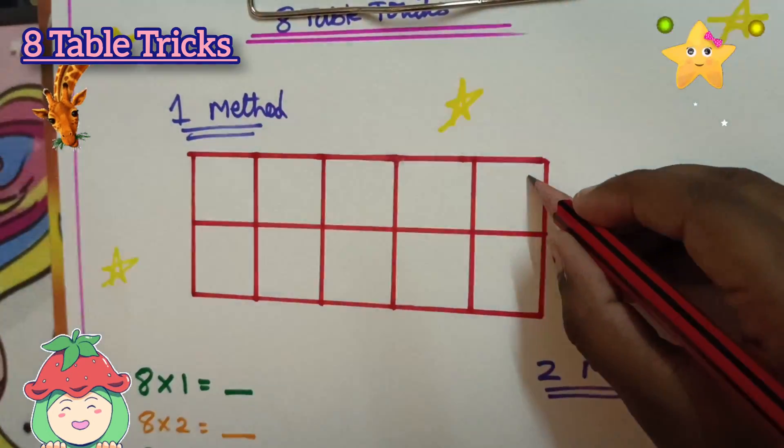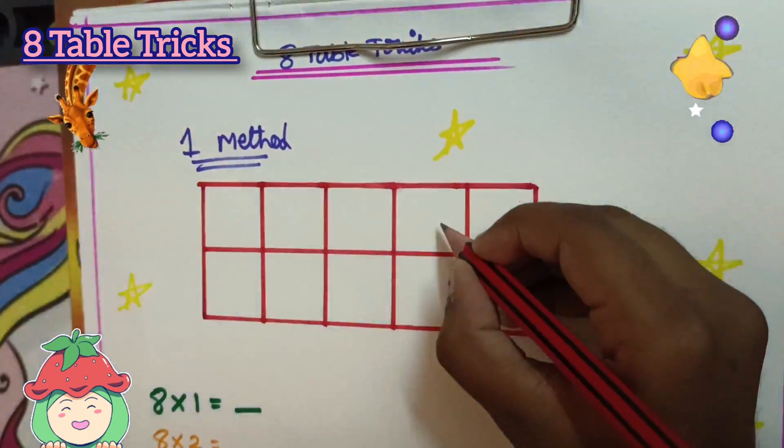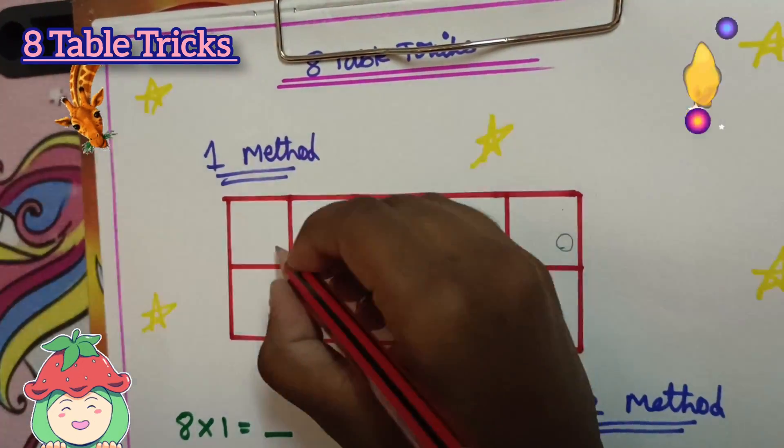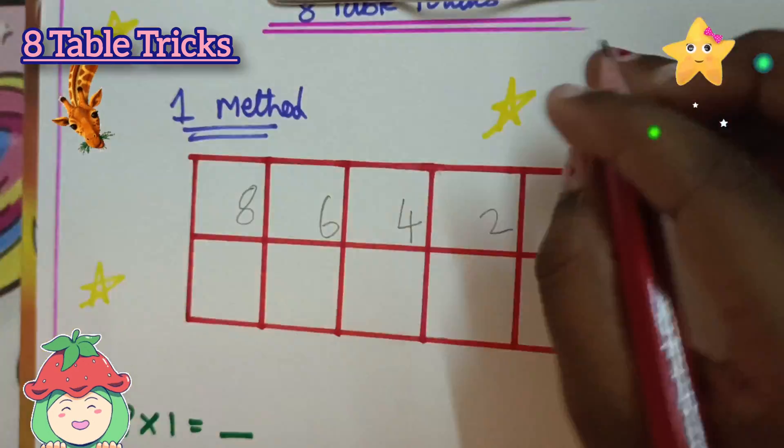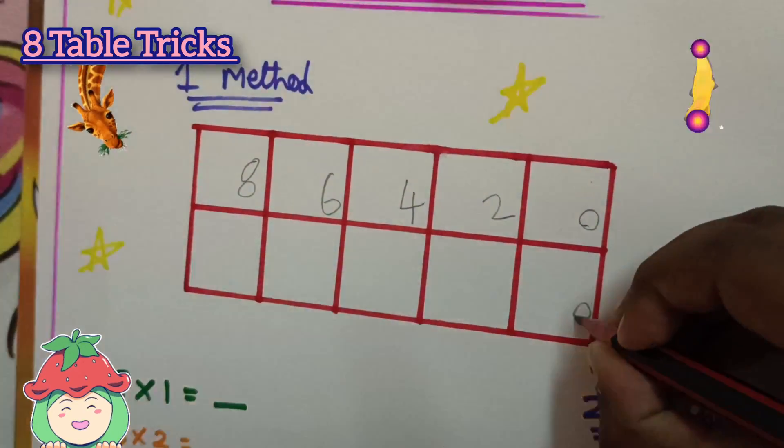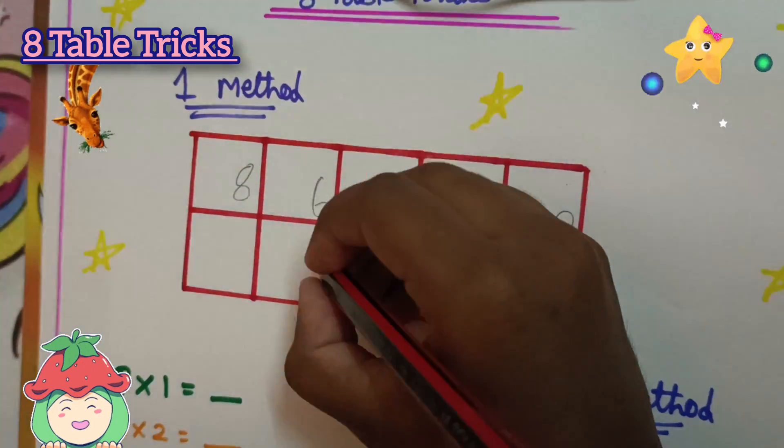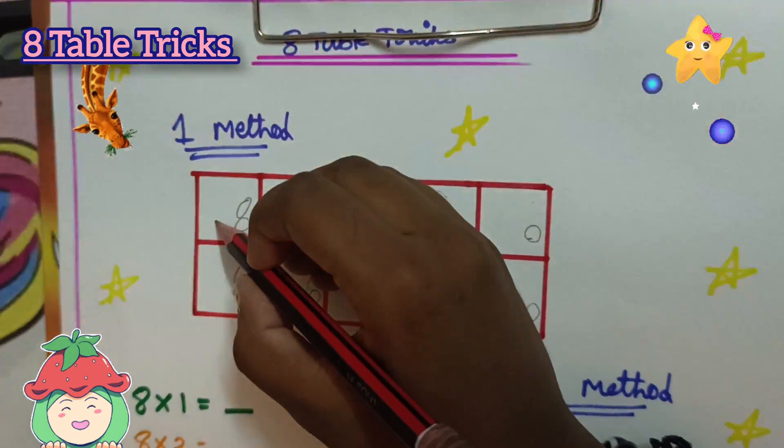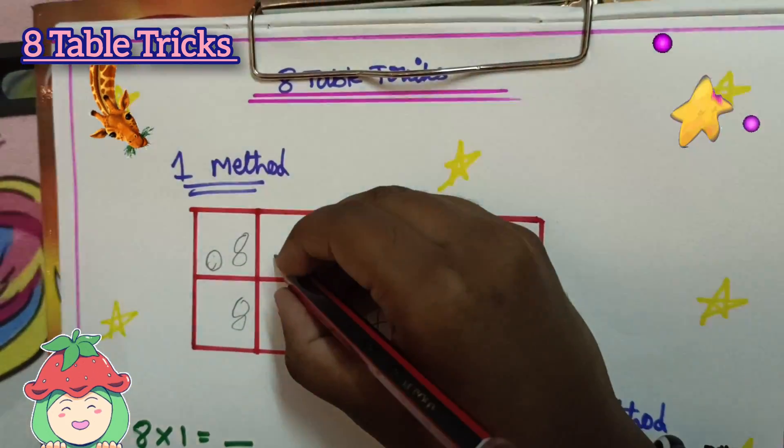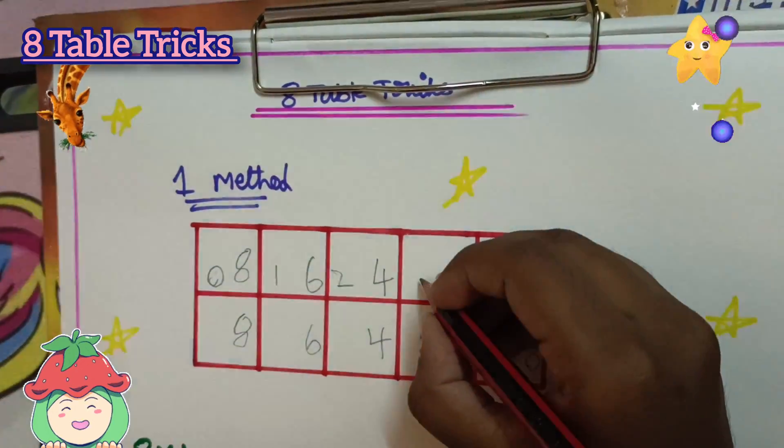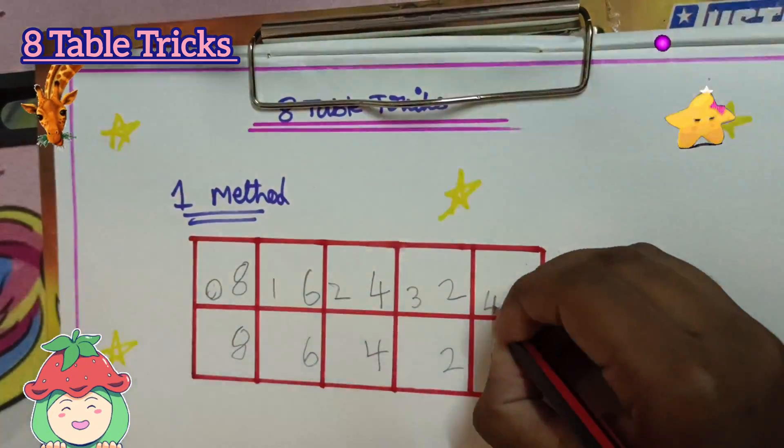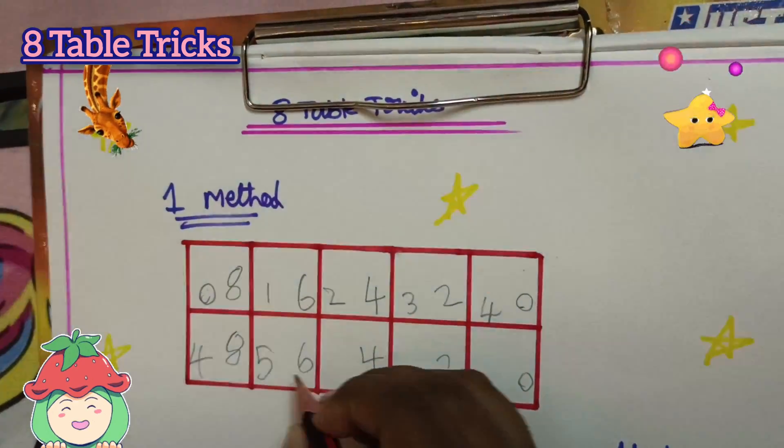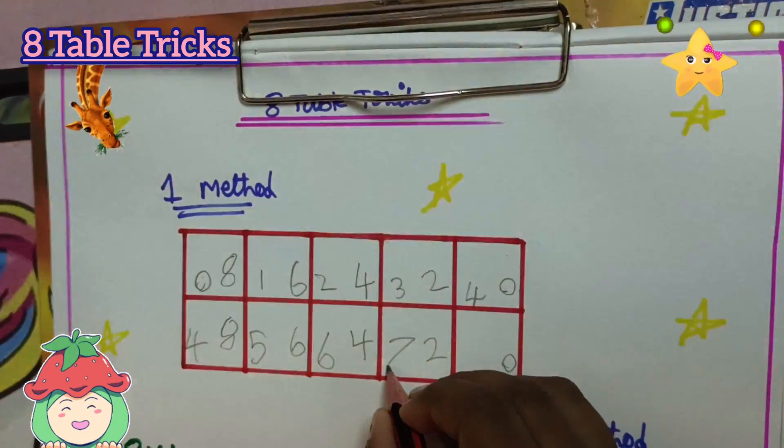First, we will start with 0, 2, 4, 6, 8. Now we will fill in the grid with 0, 1, 2, 3, 4, 5, 6, 7, 8.